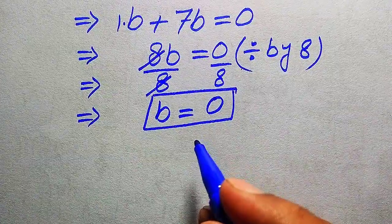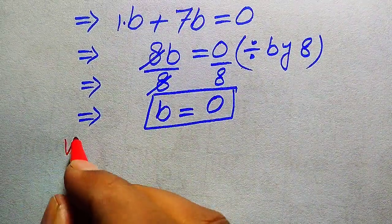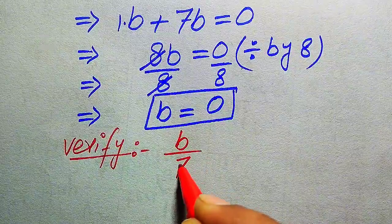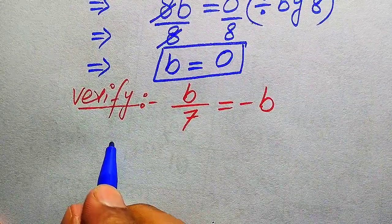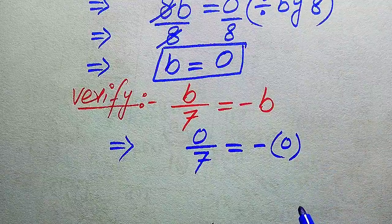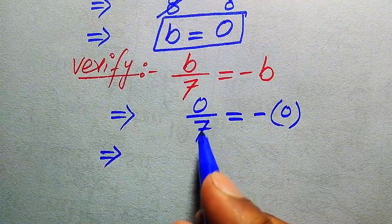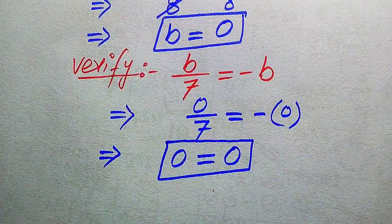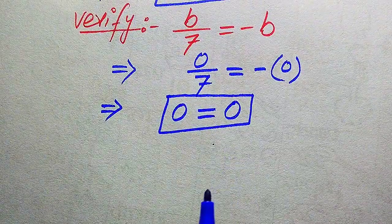So we get only one root of the given equation, and that is b equals 0. In the next step we verify whether this value of b satisfies the given equation or is an extraneous root. We substitute b equals 0 on both sides: we get 0 divided by 7 equals minus times 0. Since 0 divided by any number equals 0, we get 0 equals 0, and both sides are equal.